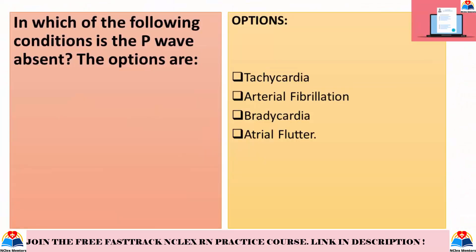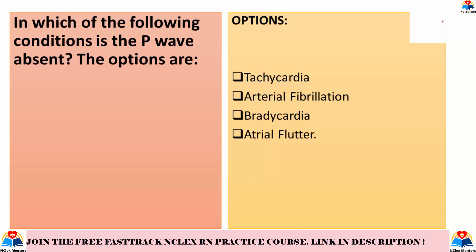In which of the following conditions is the P-wave absent? Options: tachycardia, atrial fibrillation, bradycardia, atrial flutter. The correct answer is atrial fibrillation. Tachycardia and bradycardia are not correct, nor is atrial flutter — in atrial flutter, in fact, we see multiple P-waves in between each QRS complex.